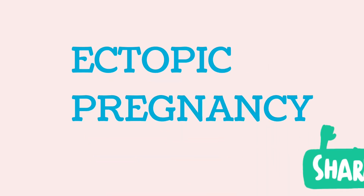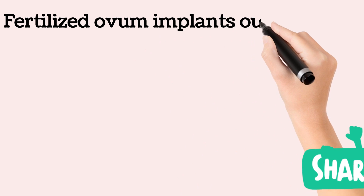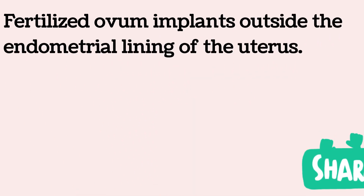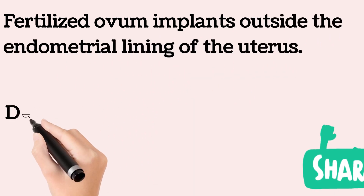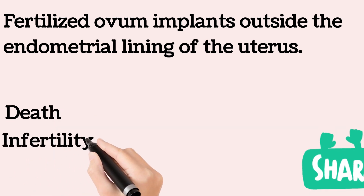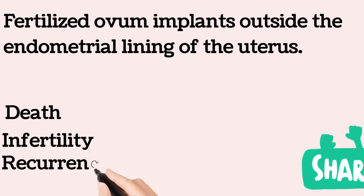Ectopic pregnancy occurs when the fertilized ovum implants outside the endometrial lining of the uterus. Death, infertility, and recurrent ectopic pregnancy are possible sequelae.